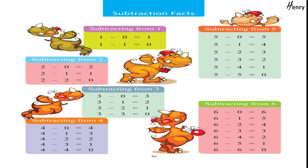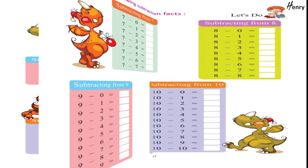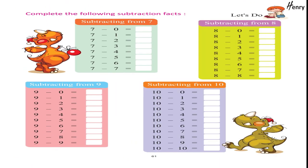Subtracting from six: six minus zero equals six; six minus one equals five; six minus two equals four; six minus three equals three; six minus four equals two; six minus five equals one; six minus six equals zero. Let's do: complete the following subtraction facts.